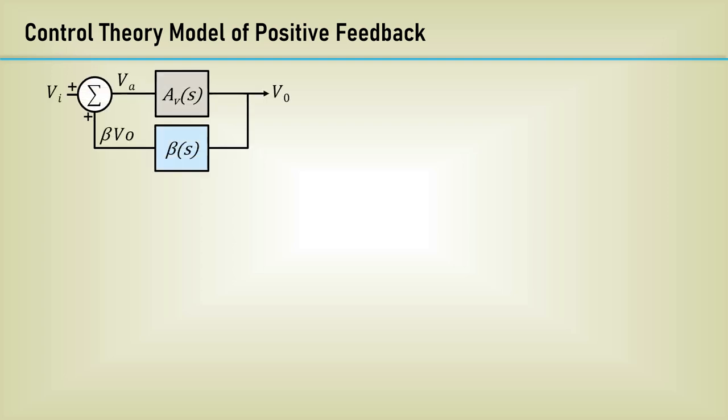Let's do a quick control theory review of positive feedback and understand the criteria for the oscillation to occur. Here's a block diagram of a feedback control system. A_V of S is the Laplace transform of the amplifier.